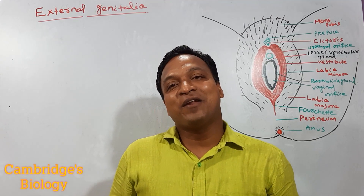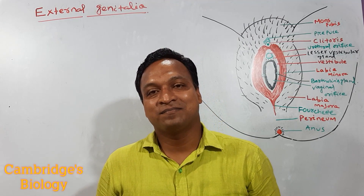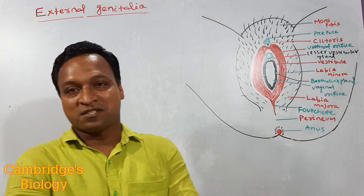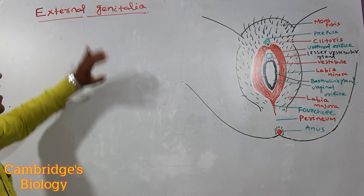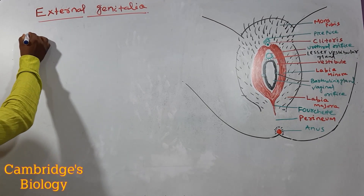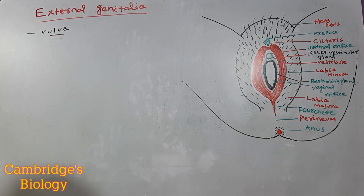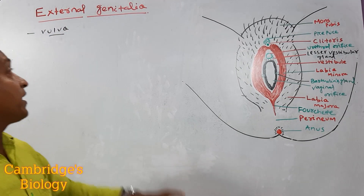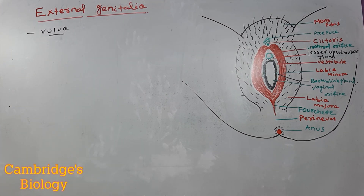Good evening to all. Welcome back again to part three of the female reproductive system. In this part we talk about external genitalia, which is otherwise called or collectively called as vulva, because it includes a number of structures.